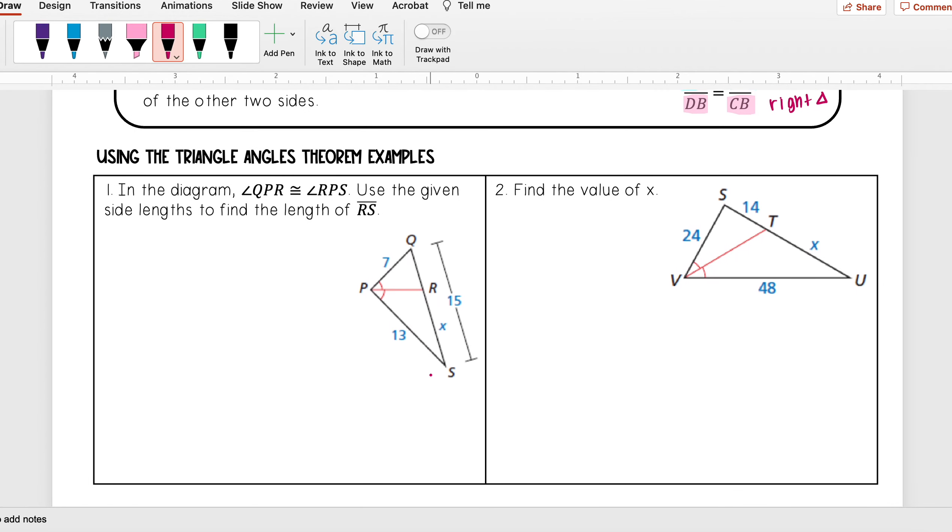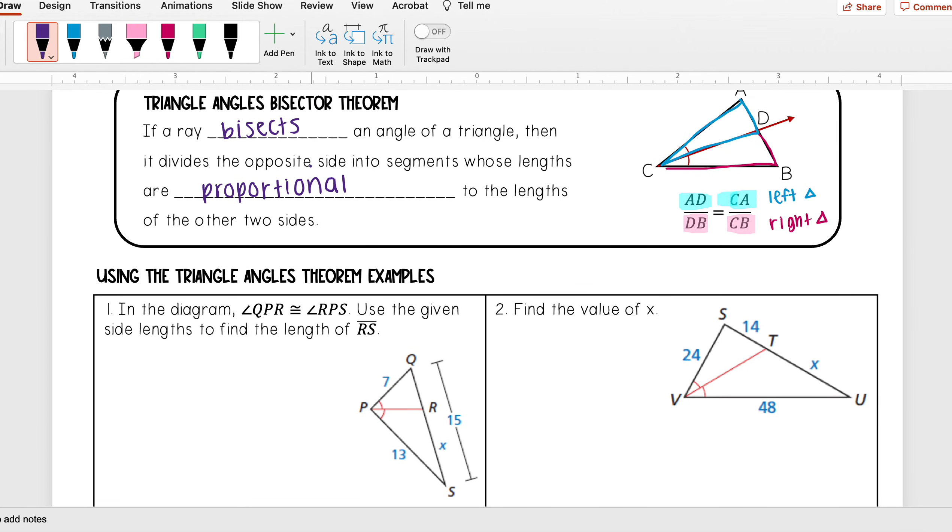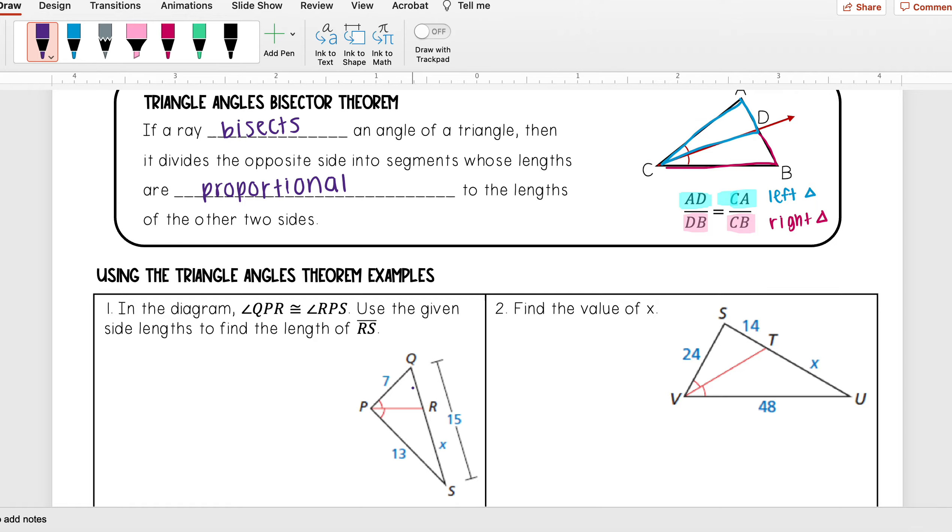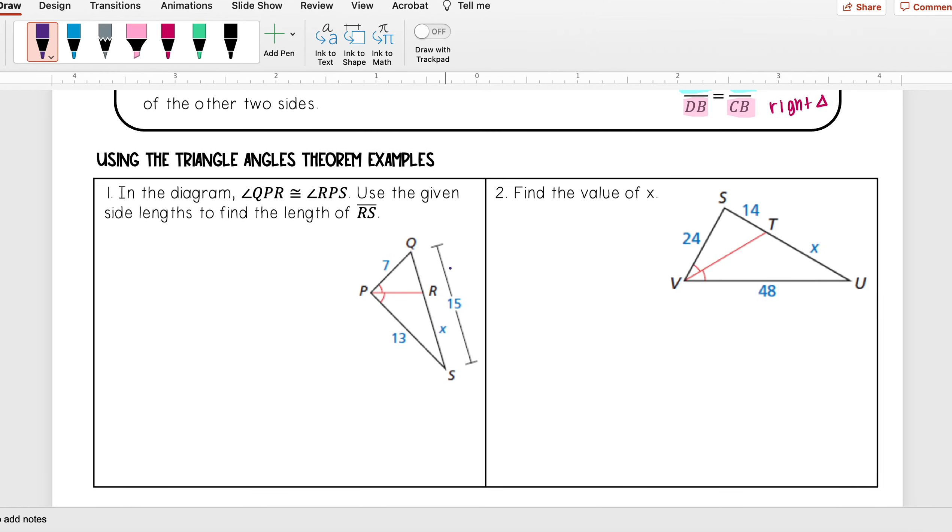So let's try a couple of examples. In the diagram, angle QPR is congruent to angle RPS, so I see that this line is indeed bisecting angle P. So I have that first part of the theorem, that ray is bisecting the angle of a triangle. And I want to use the given side lengths to find the length of RS, so I want to find x.